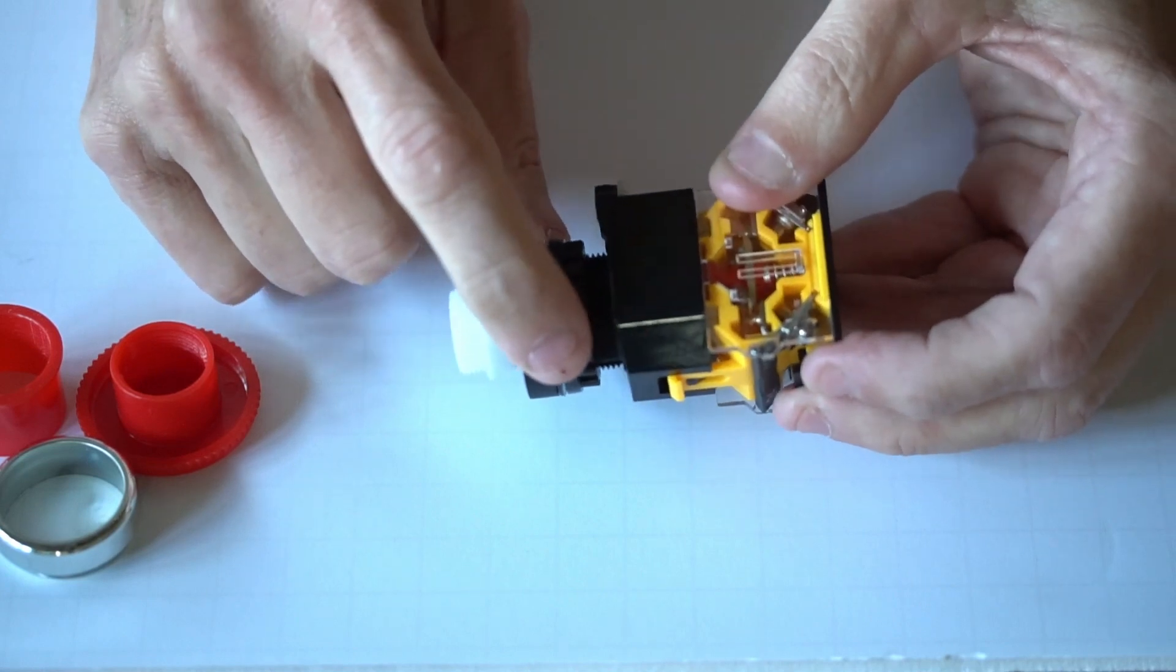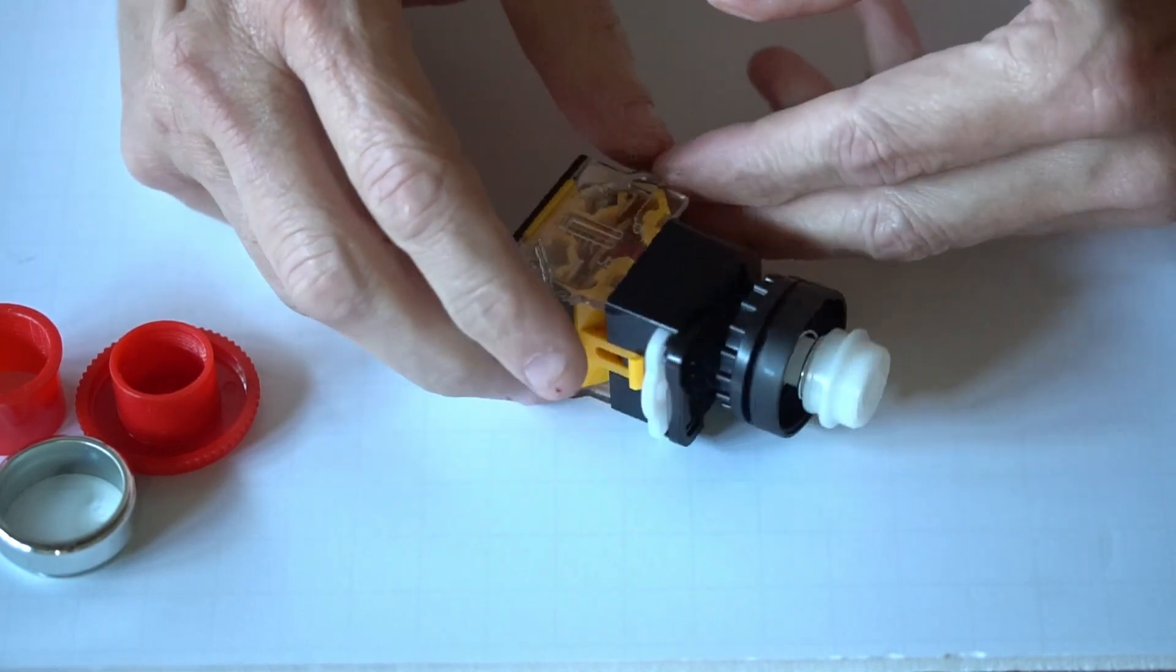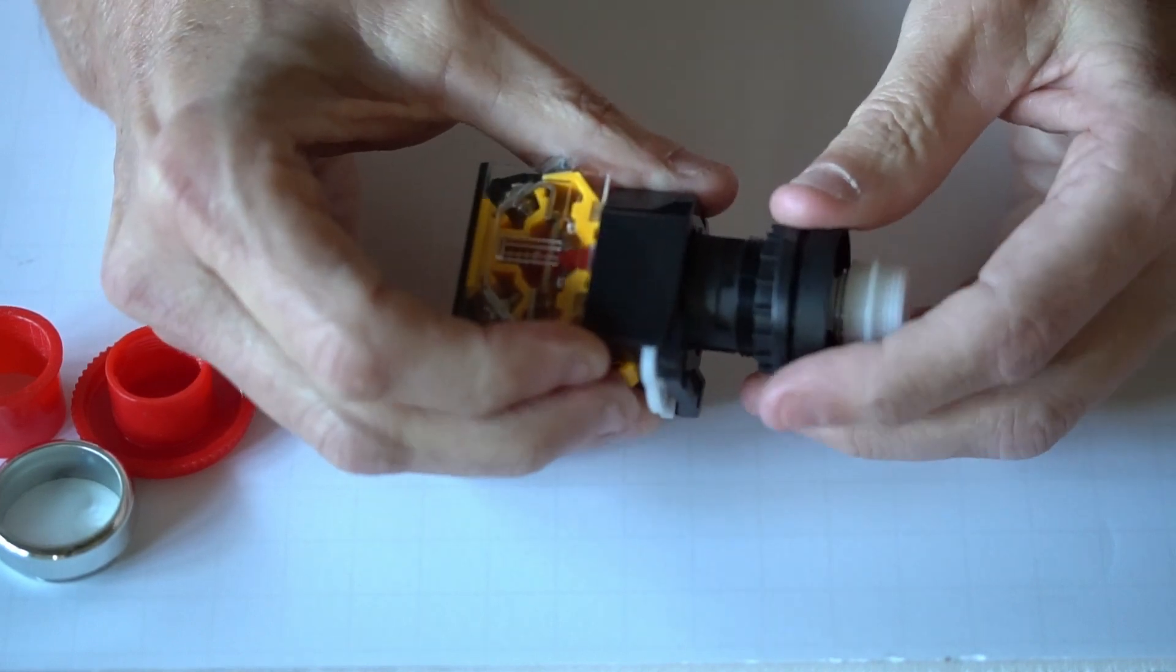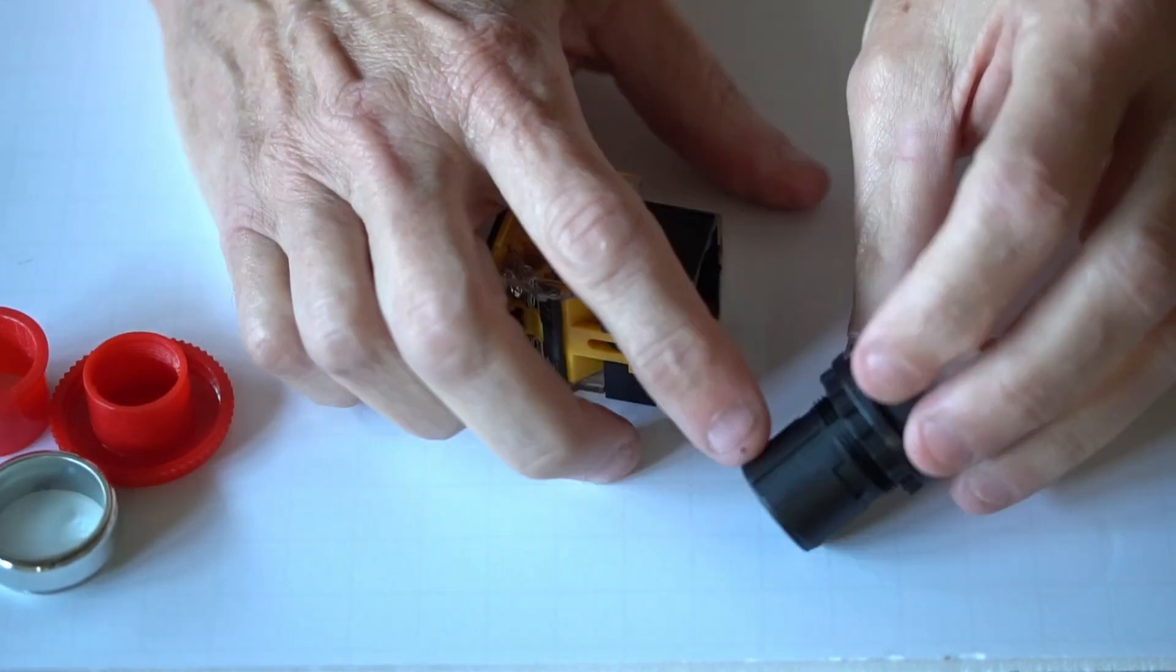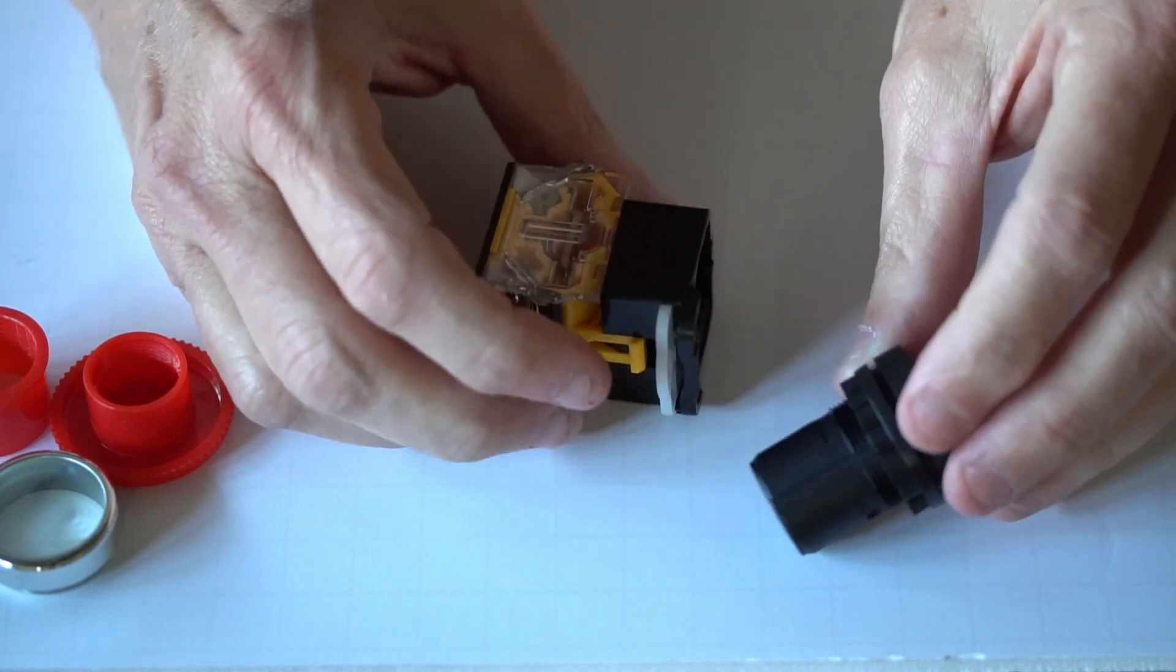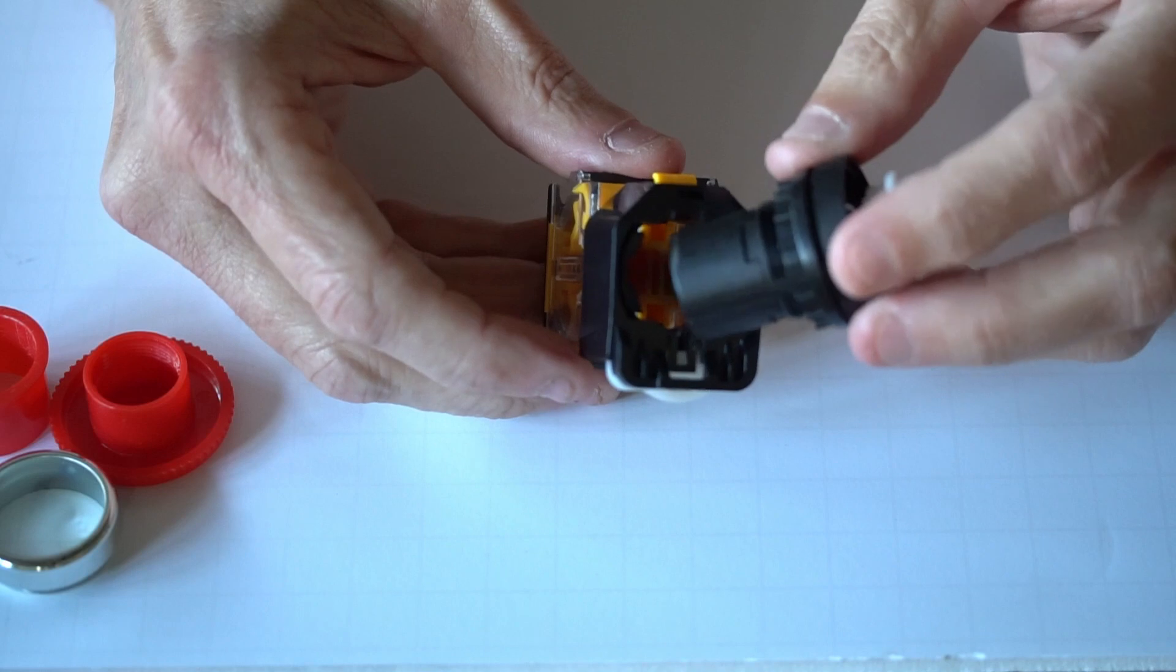To remove this section to be able to install it on the case, you press this white piece here and then you pull out this section. You can see there's grooves along the cylindrical bottom portion of this piece that aligns it correctly to this section.